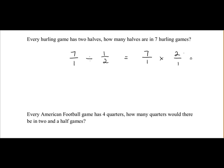7 by 2 is 14, over 1 by 1, which is 1, and that's equal to 14. We knew that would be the answer anyway. So there's 14 halves in 7 hurling games. That's how you'd represent it mathematically if you were to figure it out.